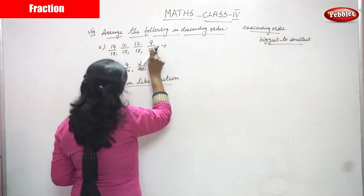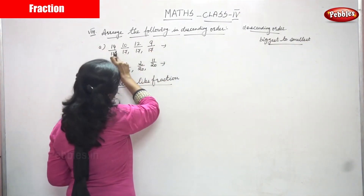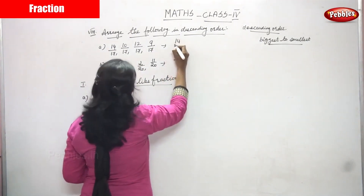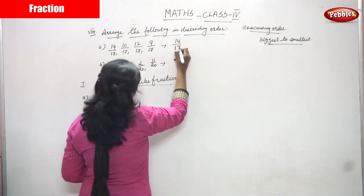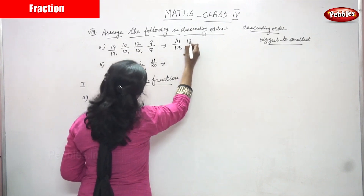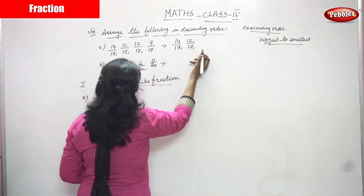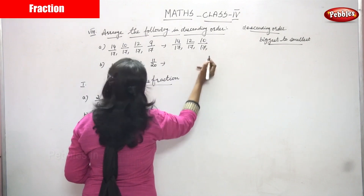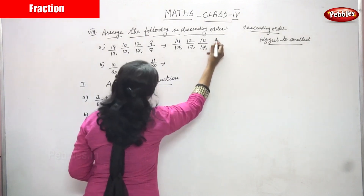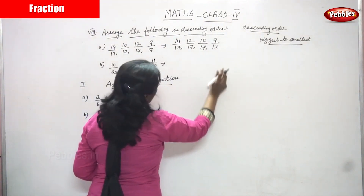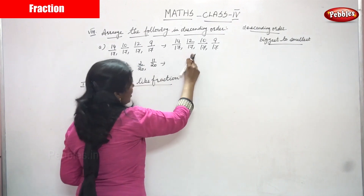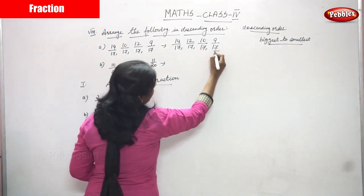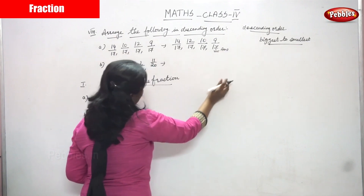So you have to look at only the numerators. First write 14 by 17, next 12 by 17, next 10 by 17, next 9 by 17. So the answer is 14 by 17, 12 by 17, 10 by 17, 9 by 17. This is the right answer for the question.